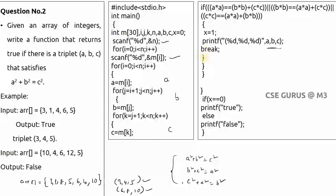After printing a triplet, we continue checking all remaining combinations. For example: (3,1,6), (3,1,5), (3,4,6), (3,4,5), and so on through all combinations. After all the for loops complete, if x = 1 we print true; if x is still zero, we print false — meaning no triplet was found.